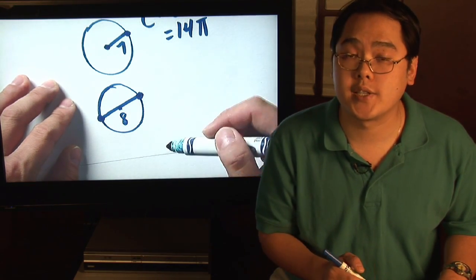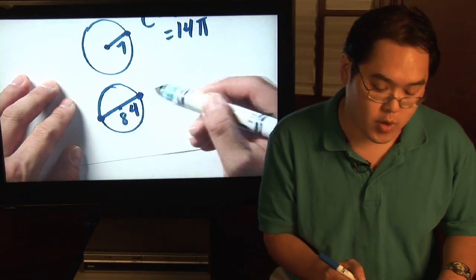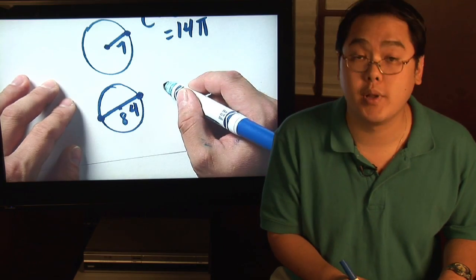Since you're looking for the radius itself, it's going to be half of 8, which of course is going to give you 4. So once you have the radius there, you can just plug it in.